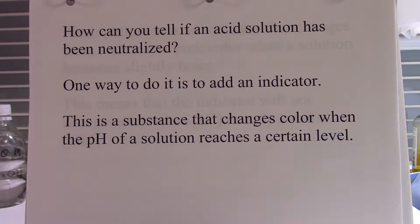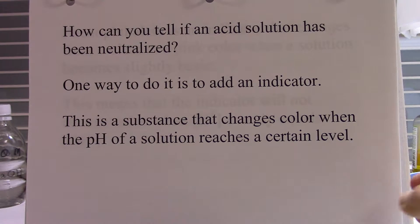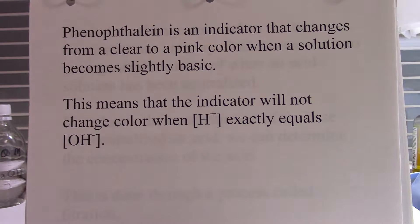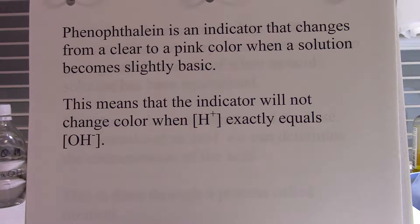Now, how can you tell if an acid solution has been neutralized? One way is to add an indicator — a substance that changes color when the pH of a solution reaches a certain level. Phenolphthalein is an indicator that changes from clear to pink when a solution becomes slightly basic. The indicator will not change color when the H+ concentration exactly equals the hydroxide concentration. Let me show you a slightly basic solution that's had phenolphthalein added to it.